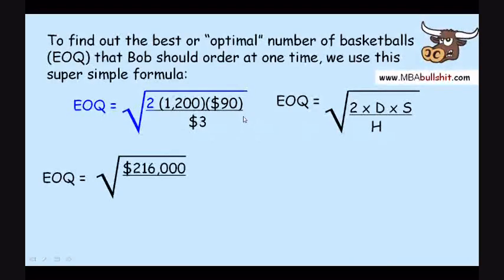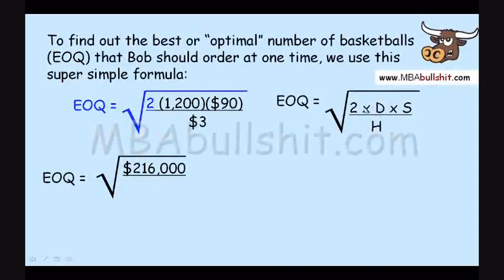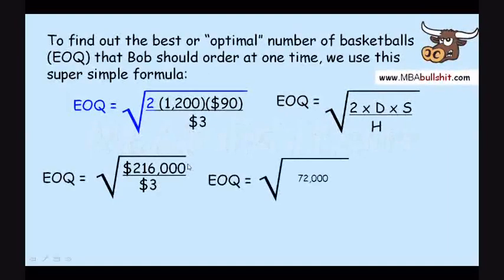If we simplify that further, 2 multiplied by 1,200 multiplied by 90. By the way, these letter X's are multiplication signs. Those are not variables. So 2 multiplied by 1,200 multiplied by 90 equals 216,000 divided by 3. We simplify that further. 216,000 divided by $3 equals 72,000. And then we get the square root of that.